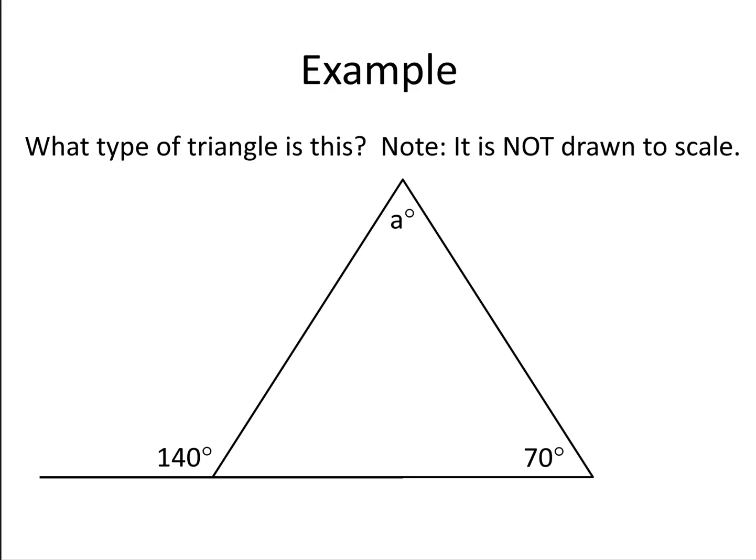What type of triangle is this? Note it is not drawn to scale. Well, first of all, I've got this angle here. I need to know two out of the three to be able to work out A. So I'm going to start by working out this angle here. This here is a straight line, so 140 plus this must add up to 180. Well, 140 plus 40 is 180, so that angle there is 40.